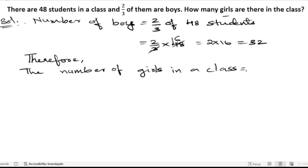We need to subtract 32, the boys, from the total. So 48 minus 32: 8 minus 2 is 6, 4 minus 3 is 1, giving us 16. Hence, there are 16 girls in the class.